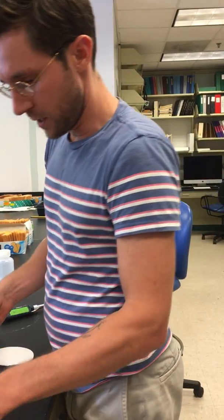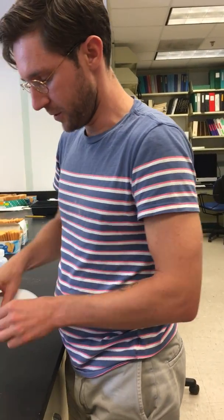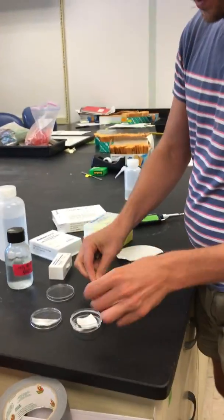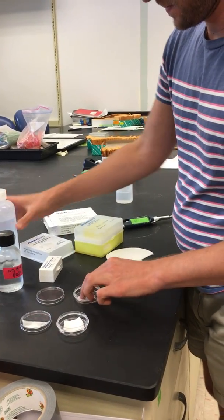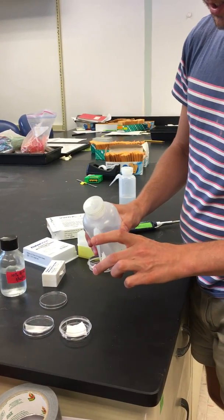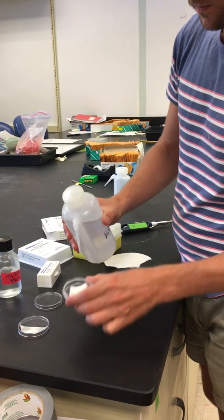So what I do is take pieces of filter paper and place them in the bottom of the petri dish and get them fully saturated.